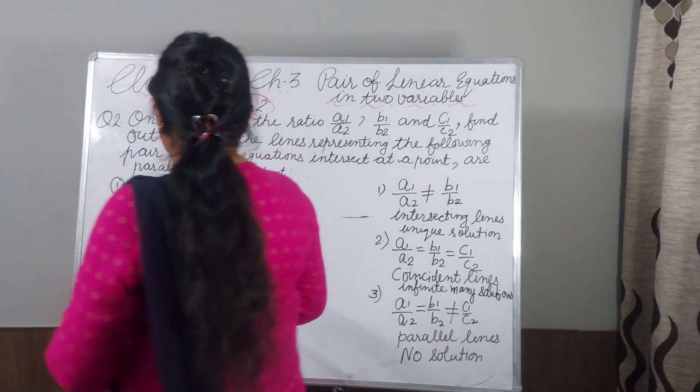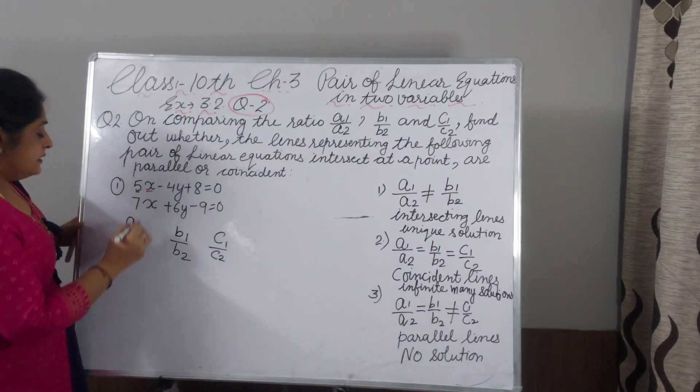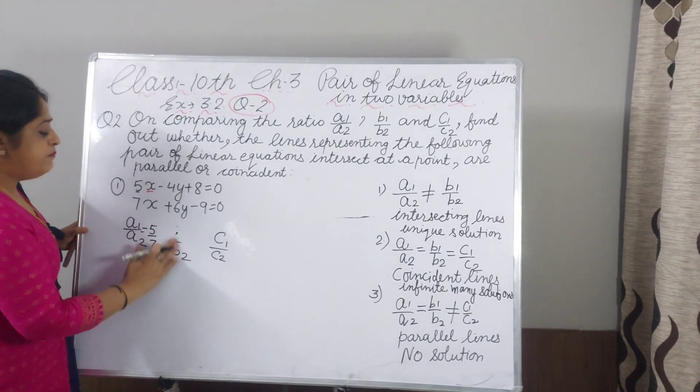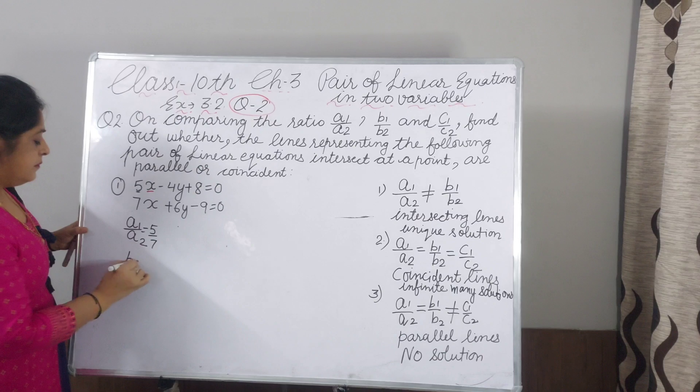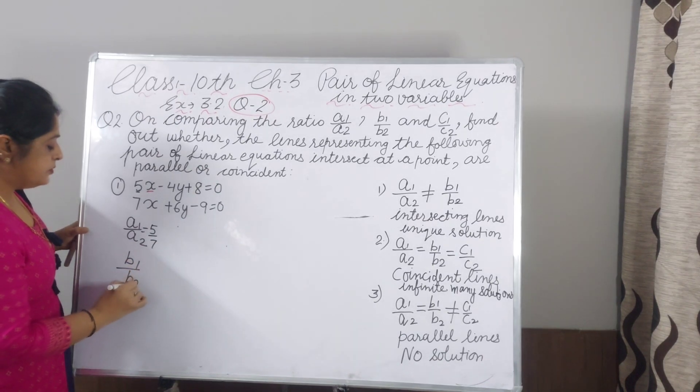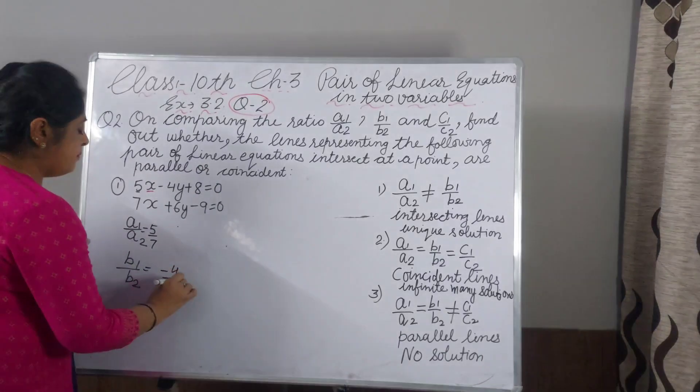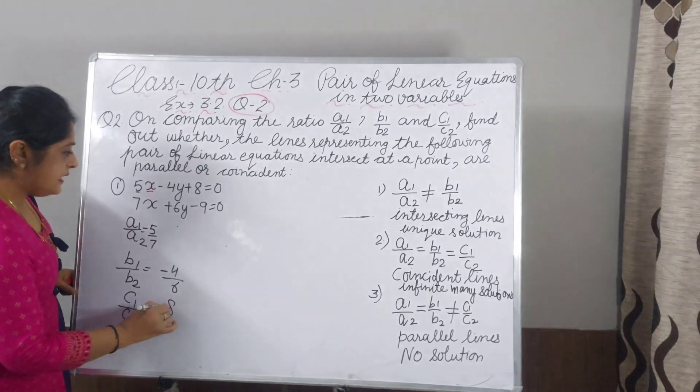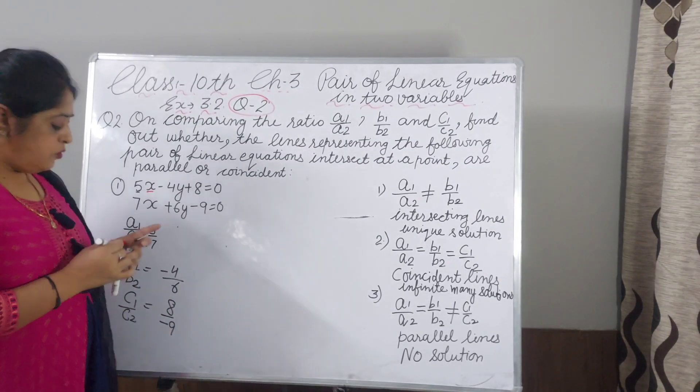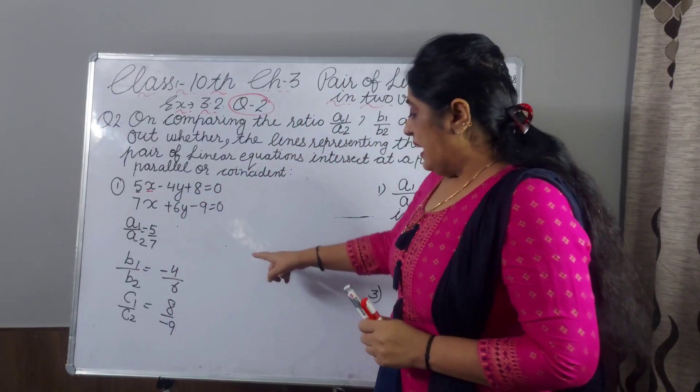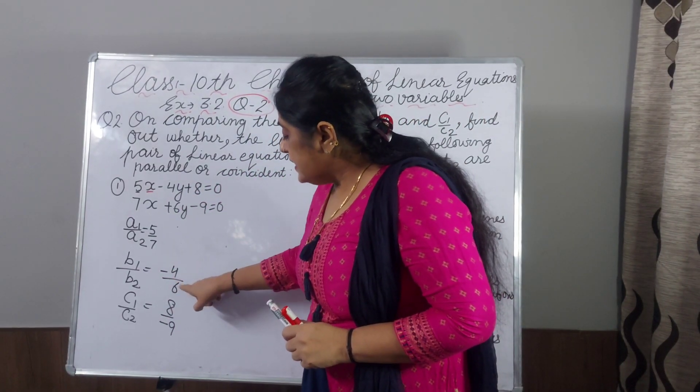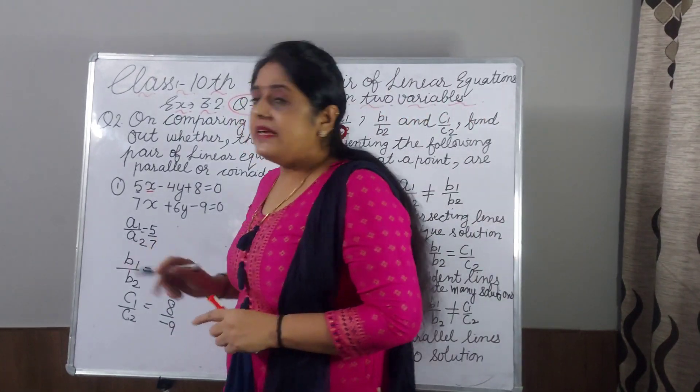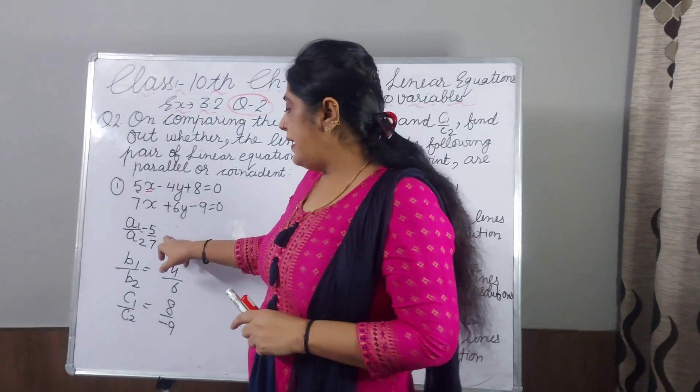Now, we compare this A1 by A2. This is 5 and A2 is 7. And B1 by B2, I will write here, it is minus 4 by 6, and C1 by C2, that is 8 upon minus 9. You have to consider one point: if they can cut each other, any table is common, so you can reduce this term. 5 and 7 not come in any table.